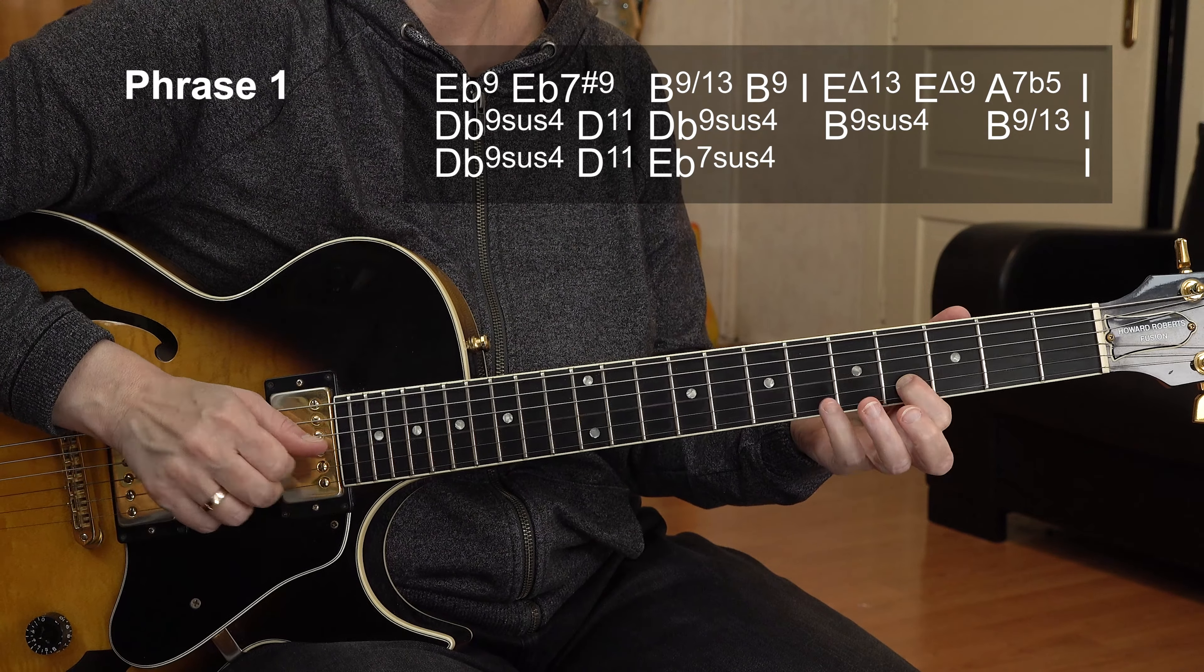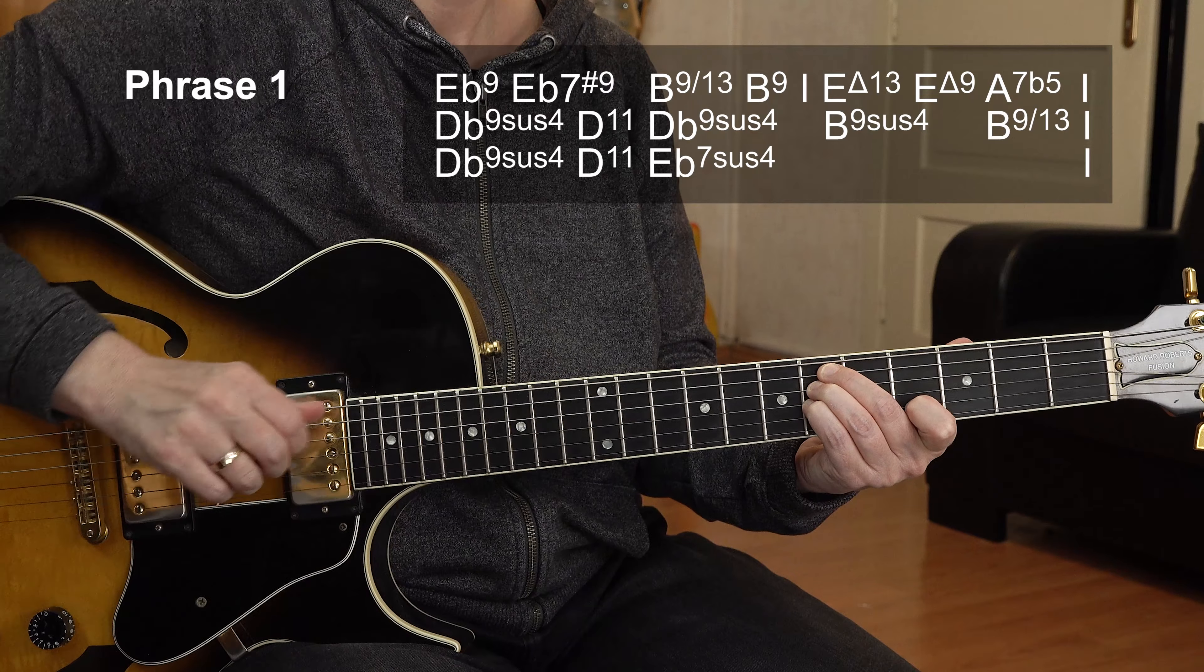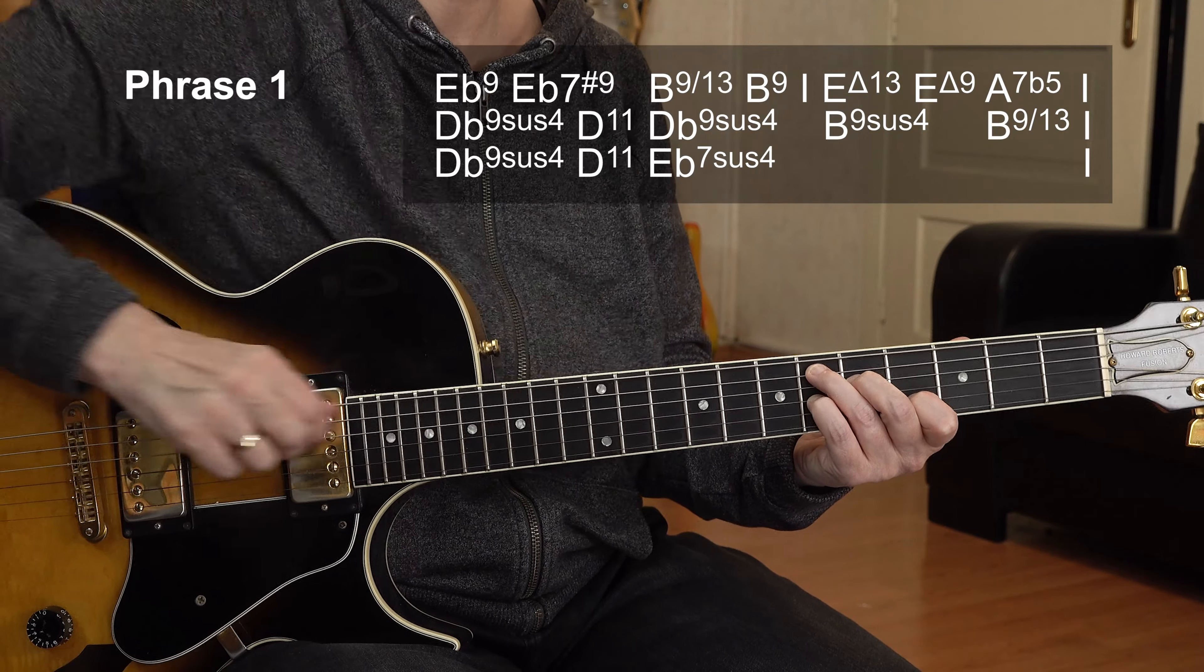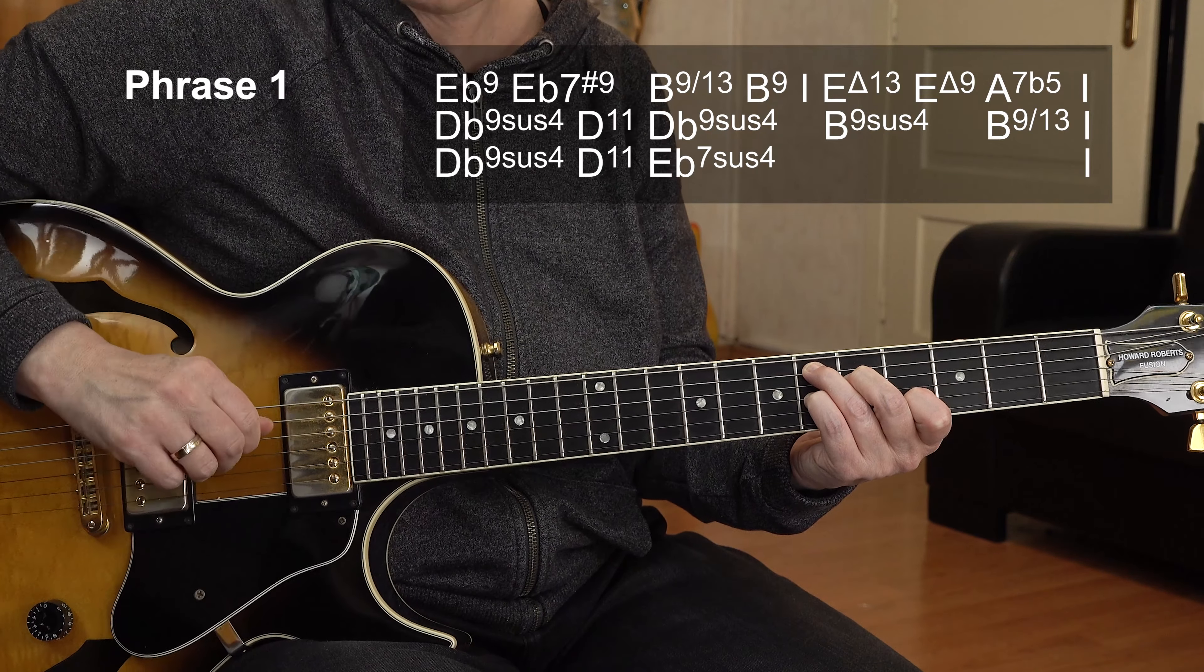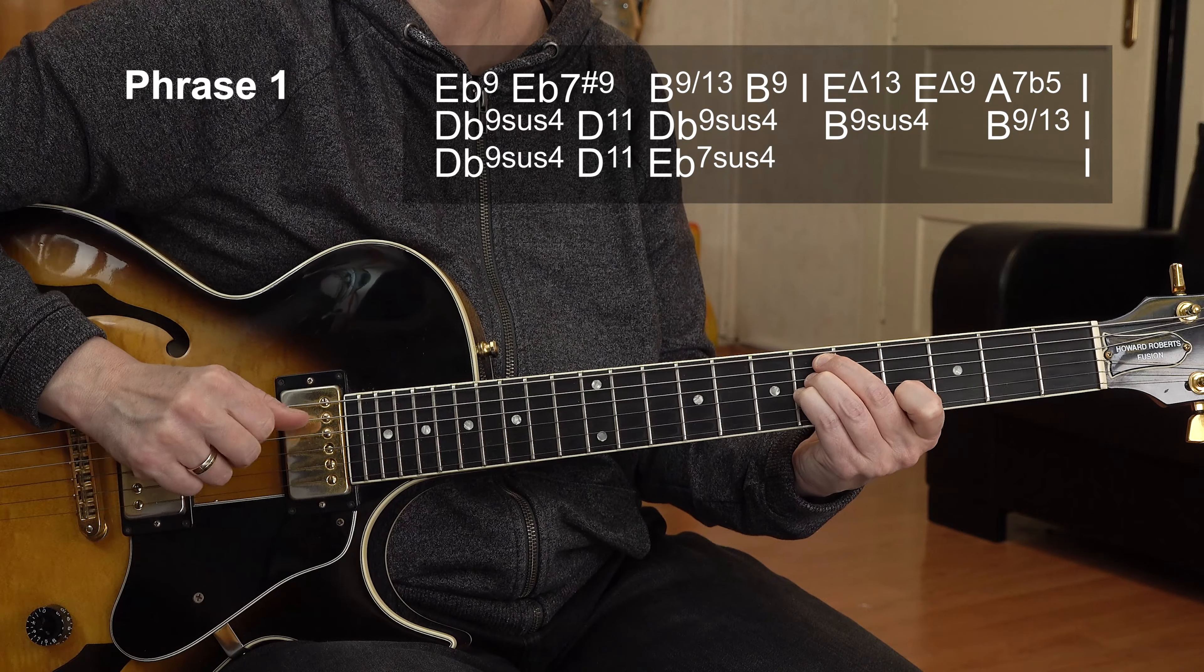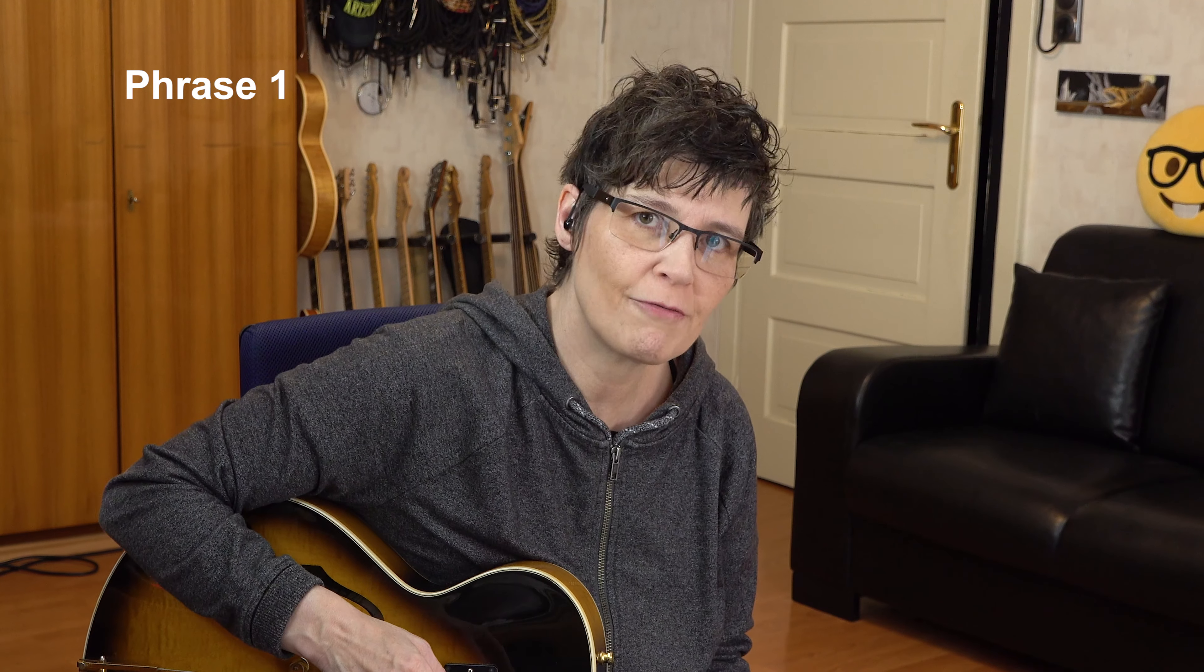And then it's back to the D flat nine sus. D11 melody. Actually, I played a melody with the pinky. Because now I add an E flat seven sus four chord. And then I change the lower part to an E flat seven to resolve it. Just play the lower three strings. Let me repeat the entire phrase one for you, the first four bars at slow tempo. Here we go.